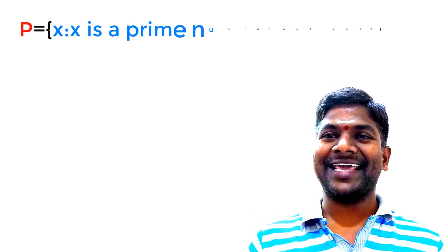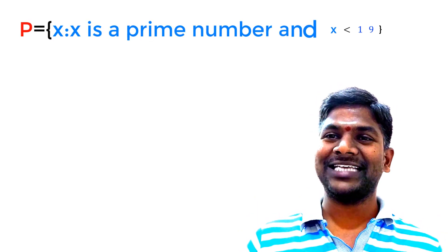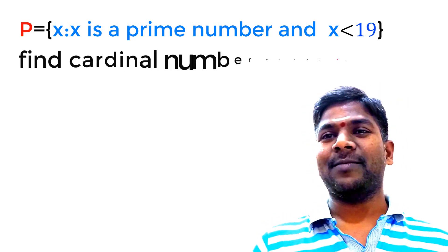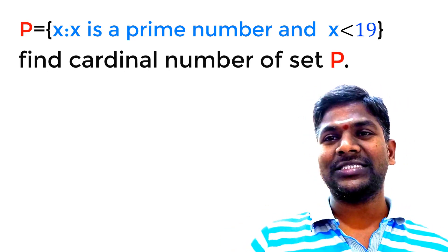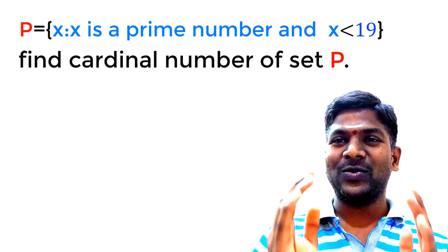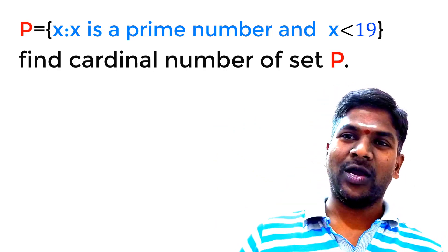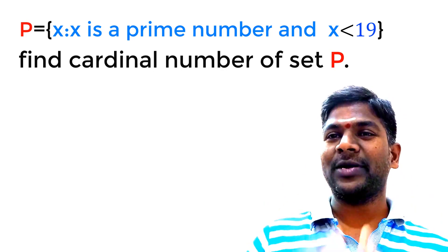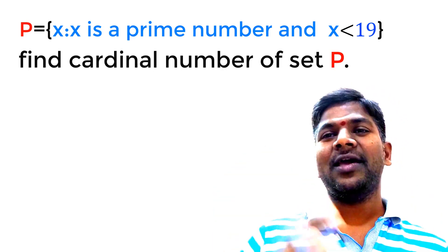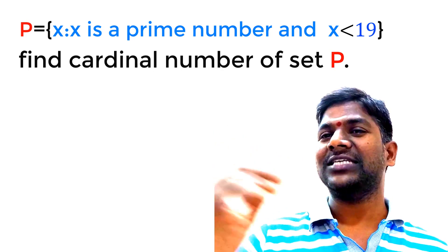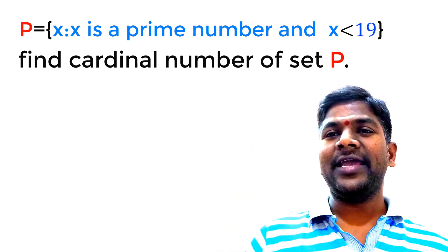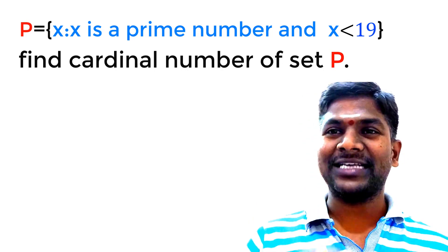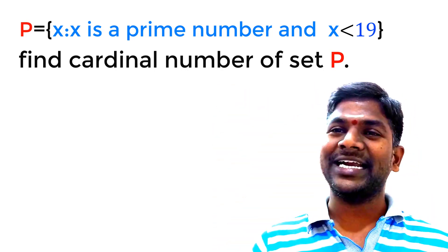Let us understand the concept of cardinal number of a set by another example. We take a set P = {x : x is a prime number and x < 19}. Find the cardinal number of set P. Here the question is given in set builder form. We have to convert the set builder form into roster form before solving the question. X denotes the elements of set P, such that X is a prime number and X is less than 19.